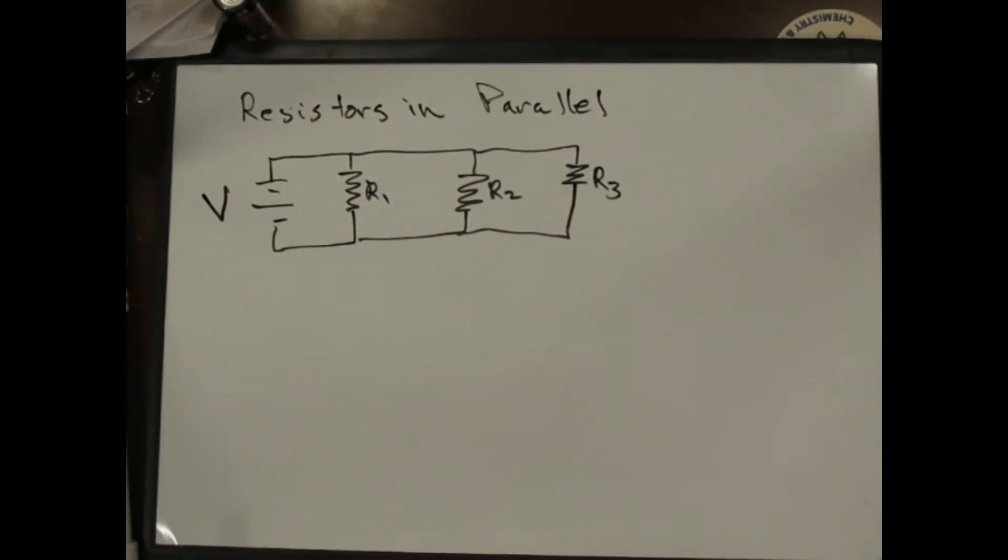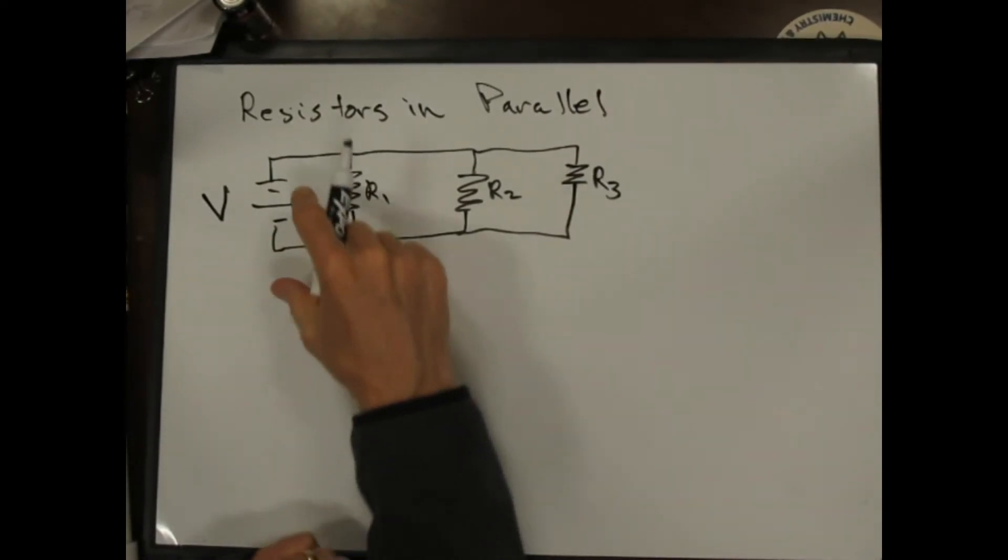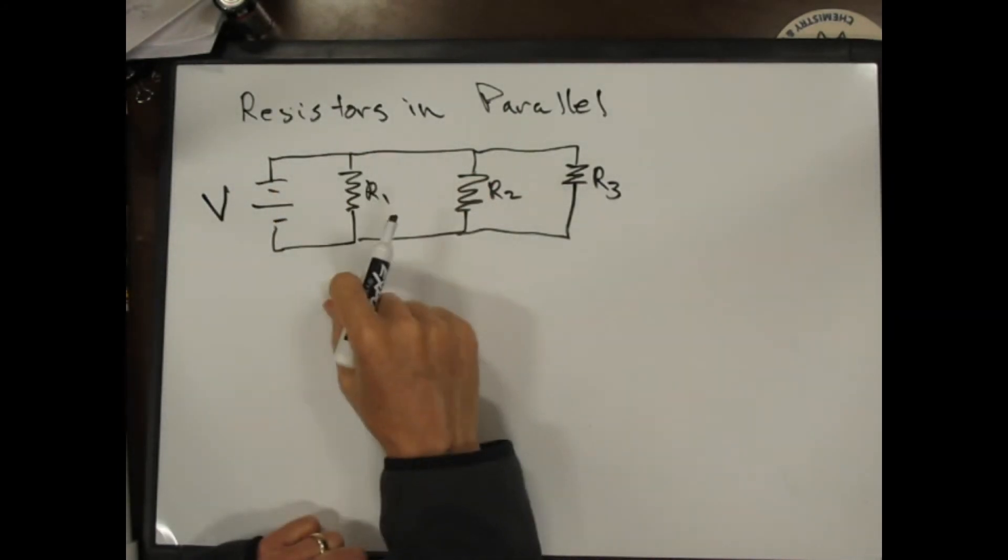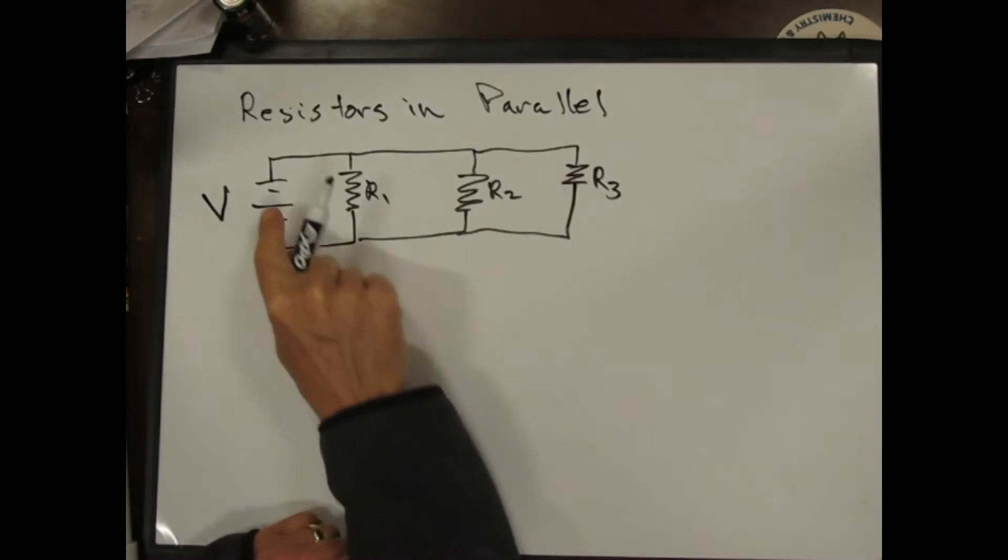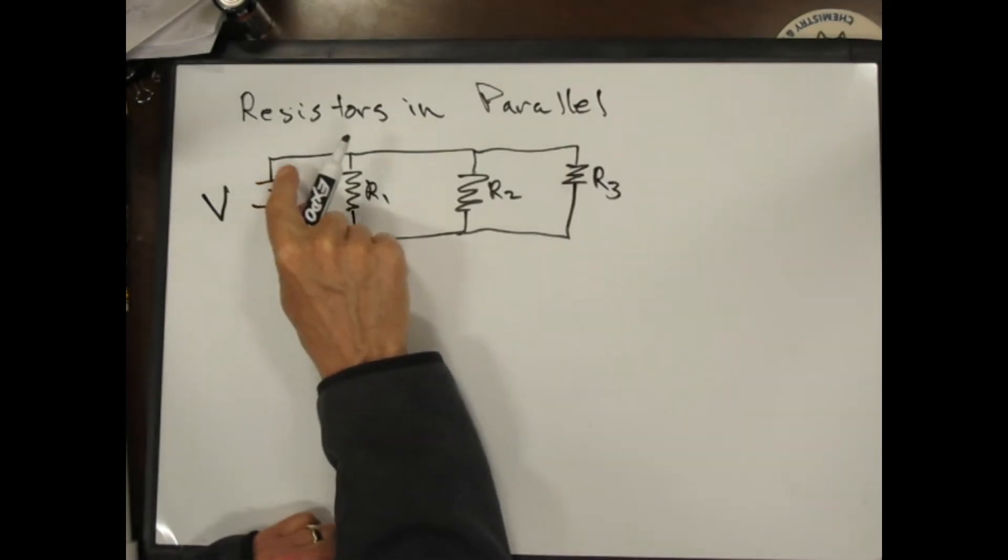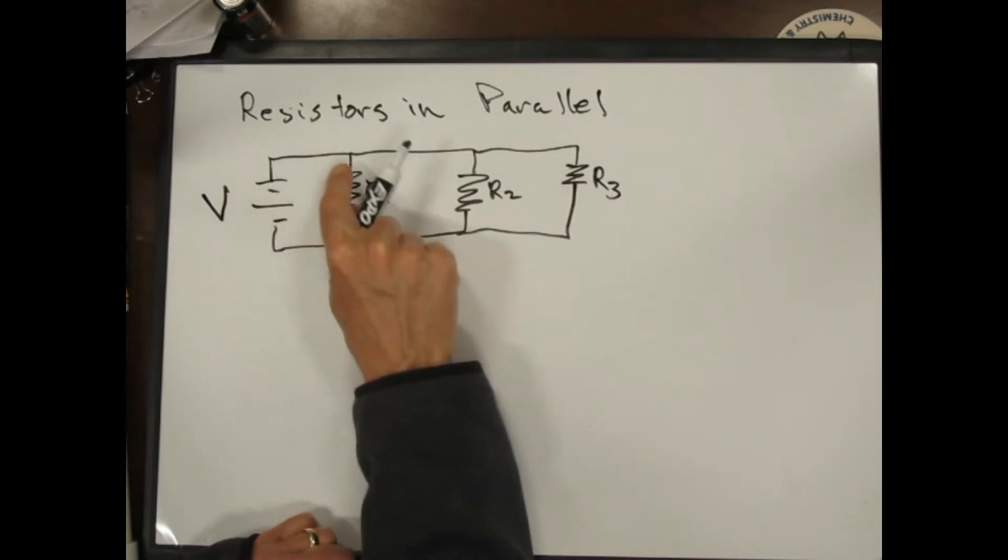We've talked about resistors in series and now we're going to look at resistors in parallel. Resistors in parallel provide multiple paths for the current to flow. Current always flows from the positive end to the negative end of the battery, and so this current can take different routes.